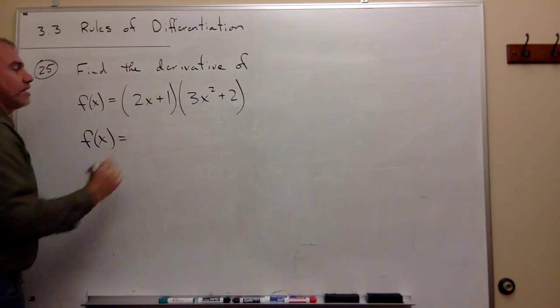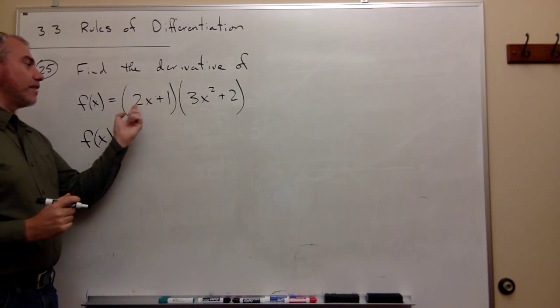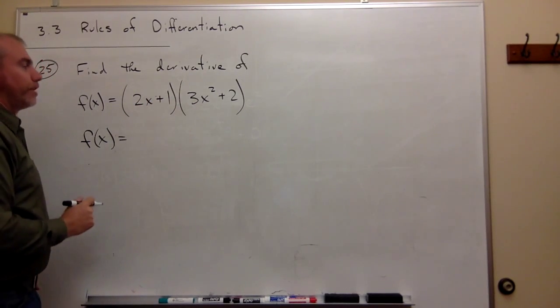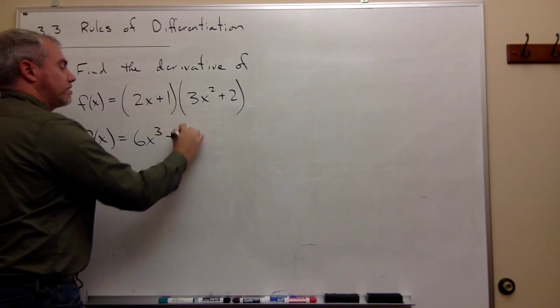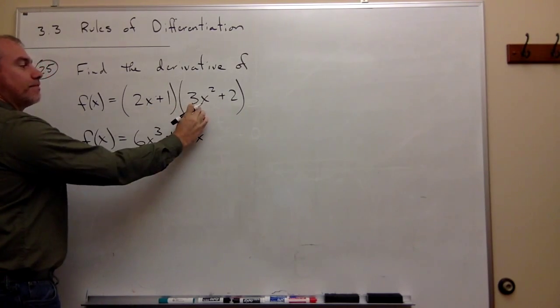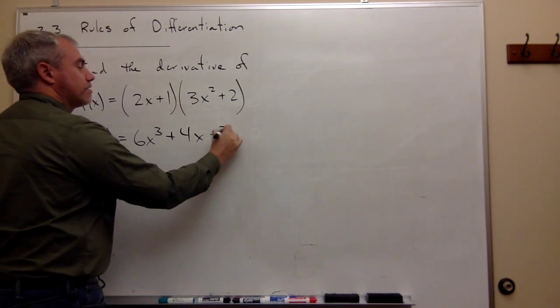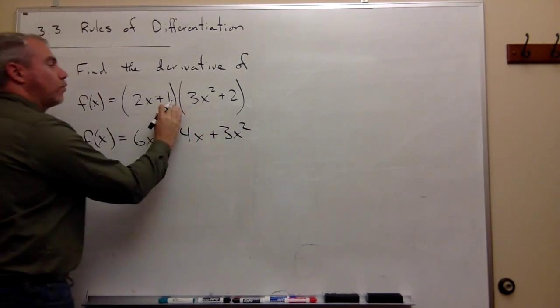So f(x) equals, let's multiply this out: 2x times 3x squared is 6x cubed, 2x times 2 is plus 4x, 1 times 3x squared is 3x squared, and 1 times 2 is plus 2.